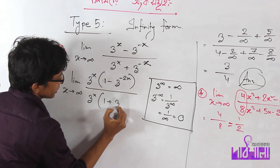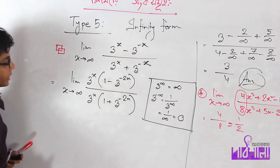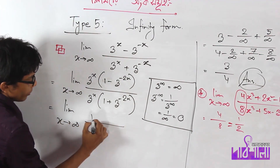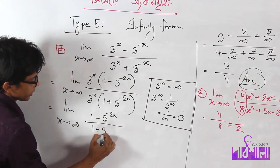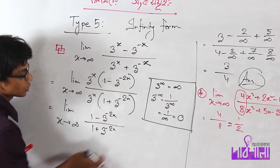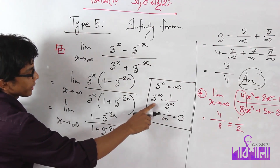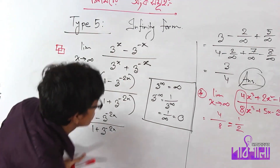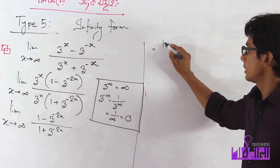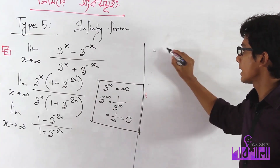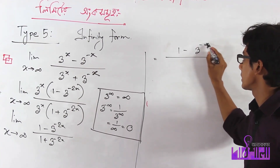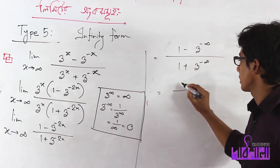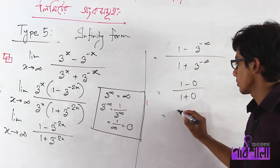Dividing numerator and denominator by 3 to the power x, we get limit x tends to infinity of (1 minus 2 to the power minus 2x) over (1 plus 2 to the power minus 2x). As x tends to infinity, those terms go to 0, giving (1 minus 0) over (1 plus 0), so the answer is 1.